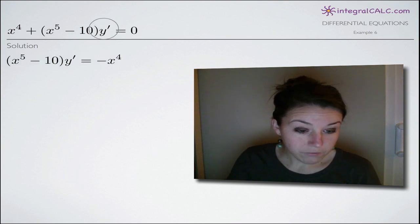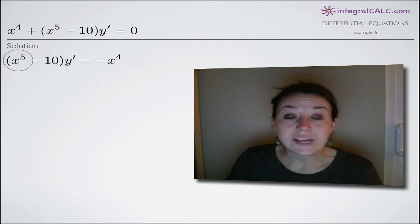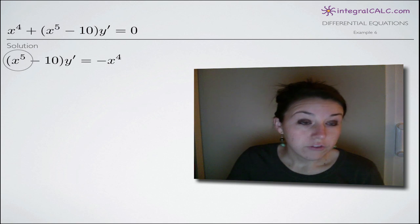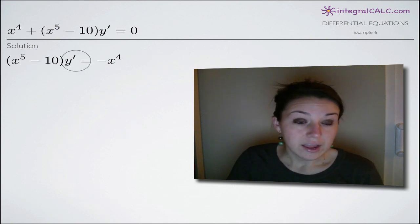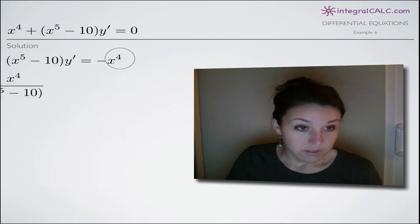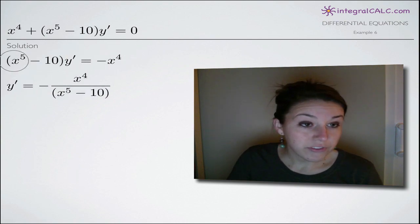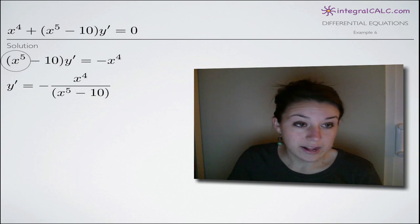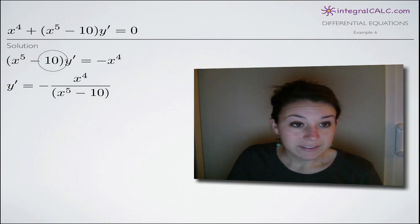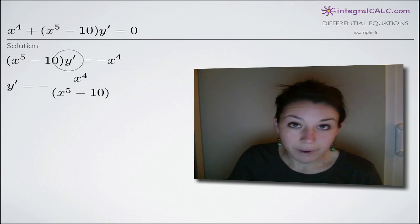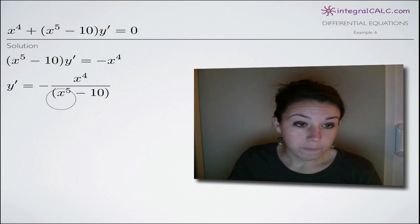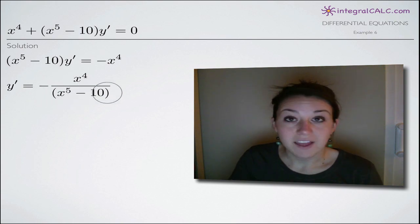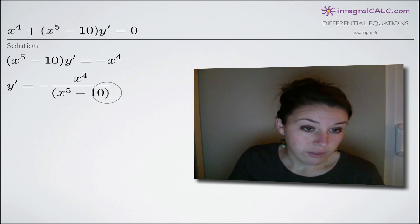The first thing we'll do is get y prime on its own. We'll subtract x to the 4th from both sides, and we'll end up with negative x to the 4th over here on the right. The next thing is to divide both sides by the quantity x to the 5th minus 10, because that's multiplied by y prime. When we divide, we'll end up with y prime on its own and x to the 5th minus 10 in the denominator on the right.